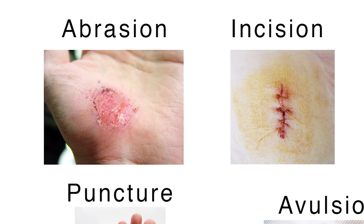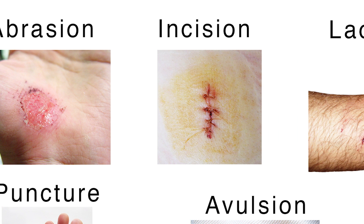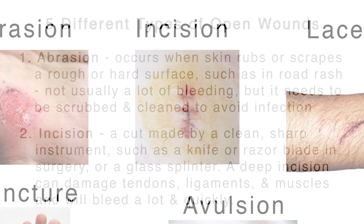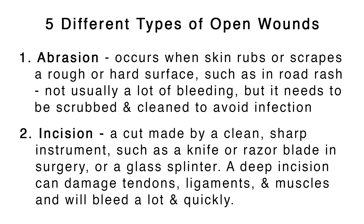Second, an incision is a cut made by a clean sharp instrument such as a knife, razor blade in surgery, or a glass splinter. A deep incision can damage tendons, ligaments, and muscles and will bleed a lot and quickly.